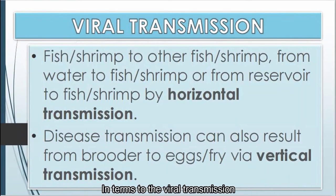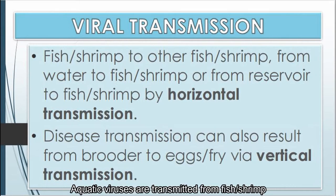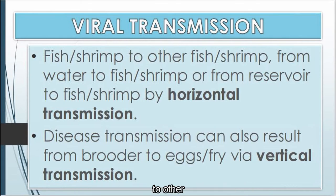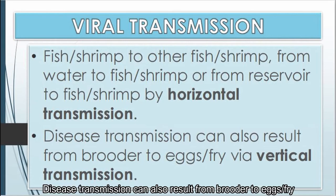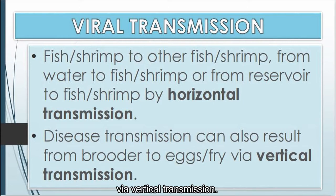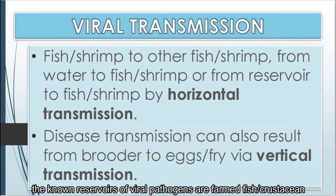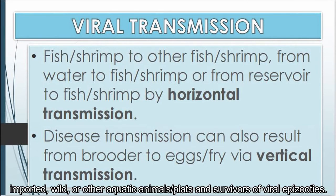In terms of viral transmission, aquatic viruses are transmitted from fish or shrimp to others, from water to fish or shrimp, or from reservoirs by horizontal transmission. Disease transmission can also result from broodstock to eggs or fry via vertical transmission. The known reservoirs of viral pathogens are farmed fish or crustaceans, imported, wild, or other aquatic animals and plants, and survivors of viral episodes.